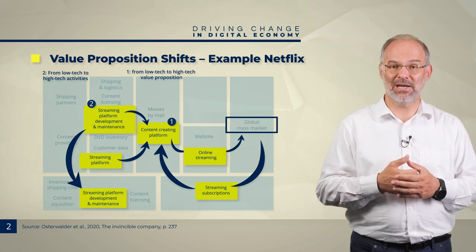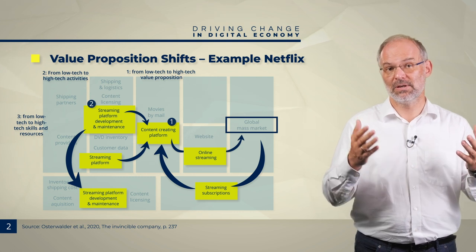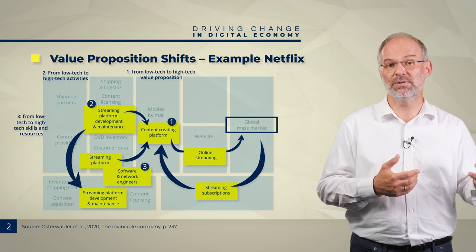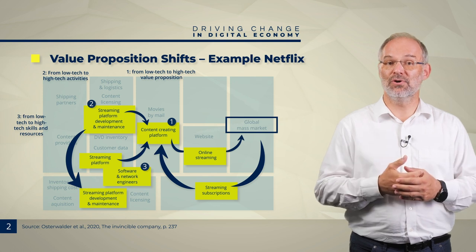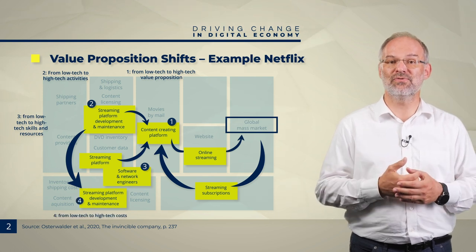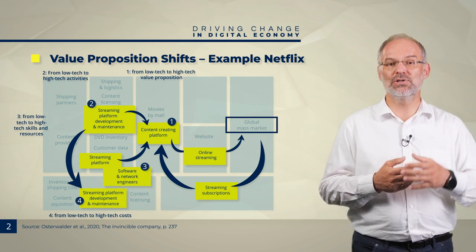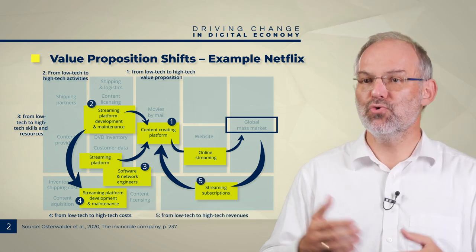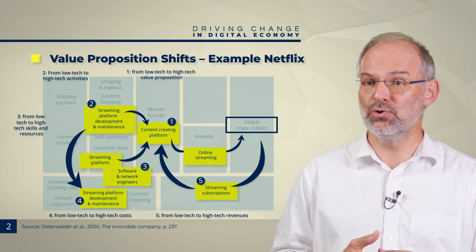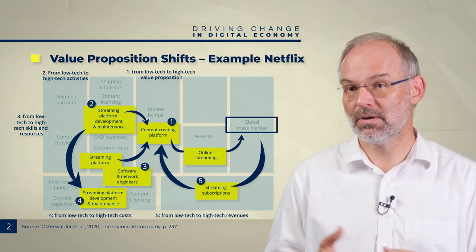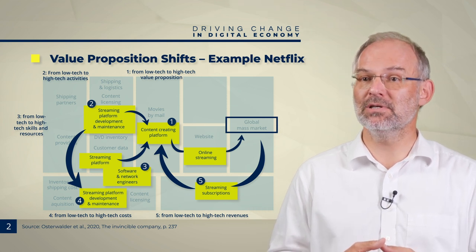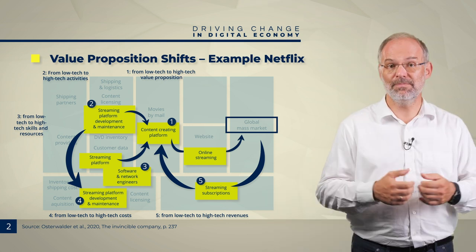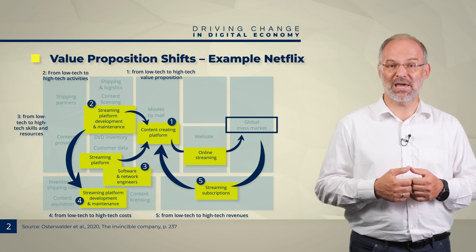Software and network engineering skills became central. Customer viewing data and recommendation algorithms gained even more importance with the shift to streaming. Data drove content investment decisions and helped customers find relevant content. As a consequence of that shift, revenues grew tenfold in the following decade. By 2018, 96 percent of revenue came from streaming. Netflix also adapted its business model again in 2013 and began producing original content. Today, Netflix has more than 200 million paying customers.